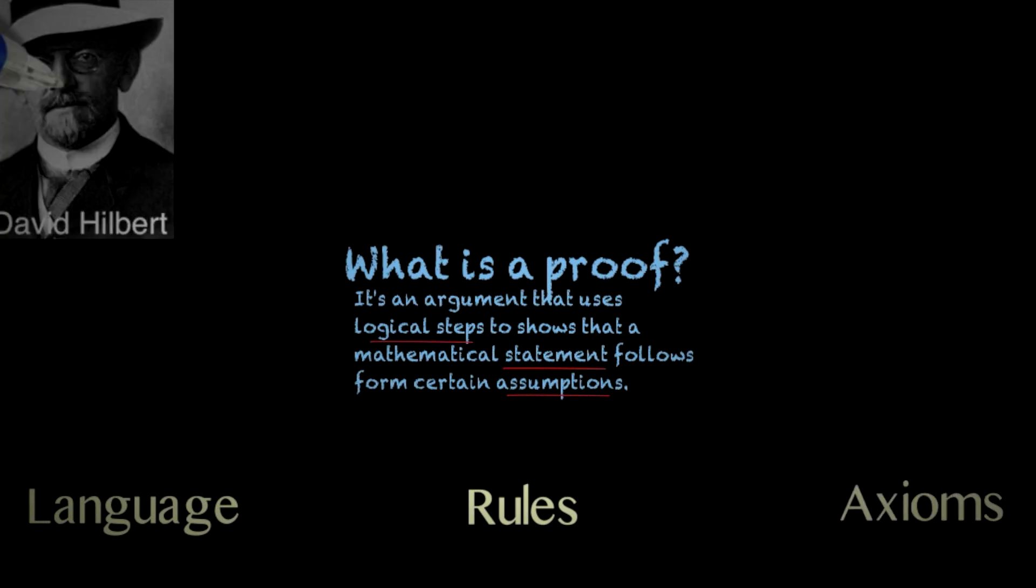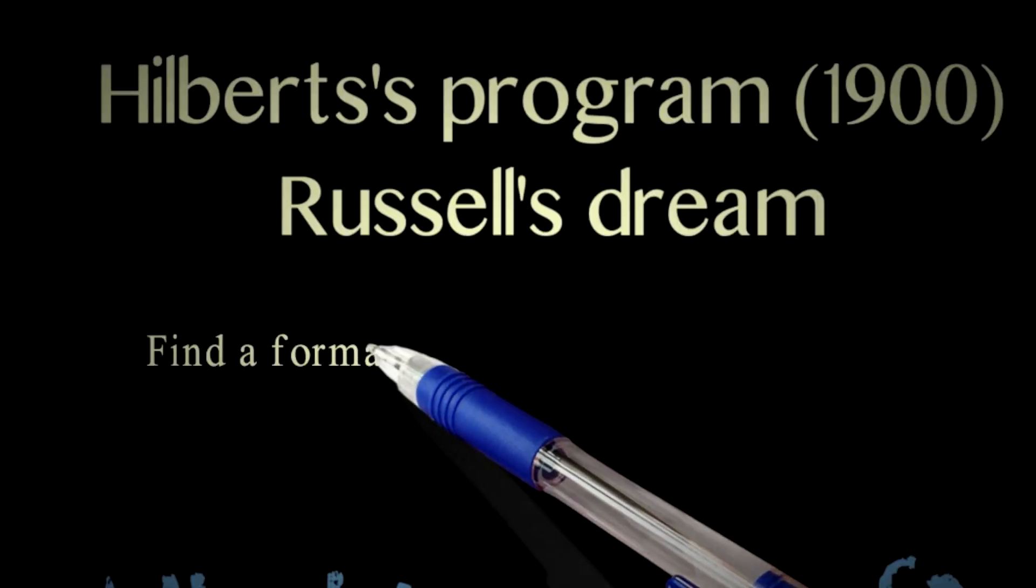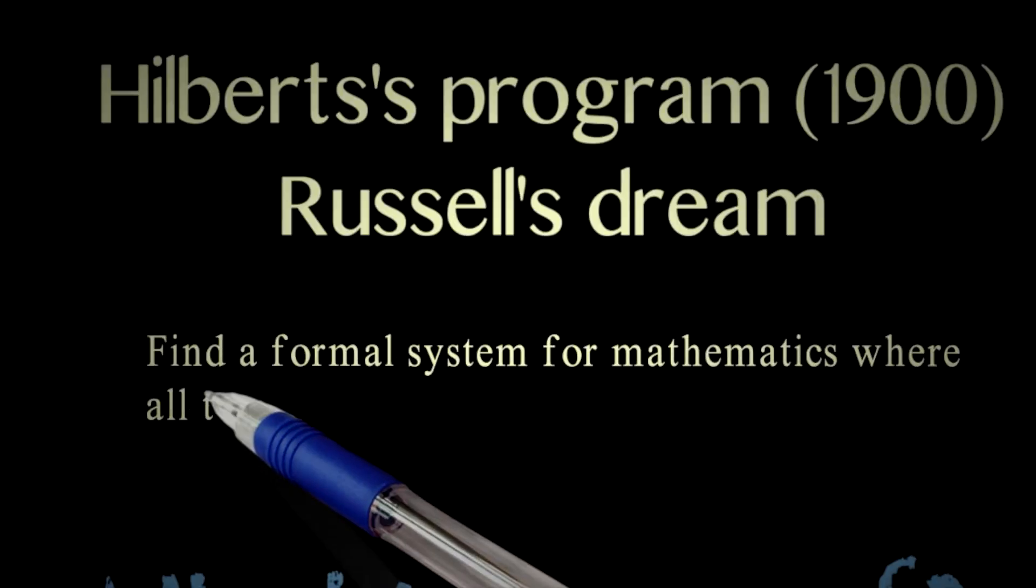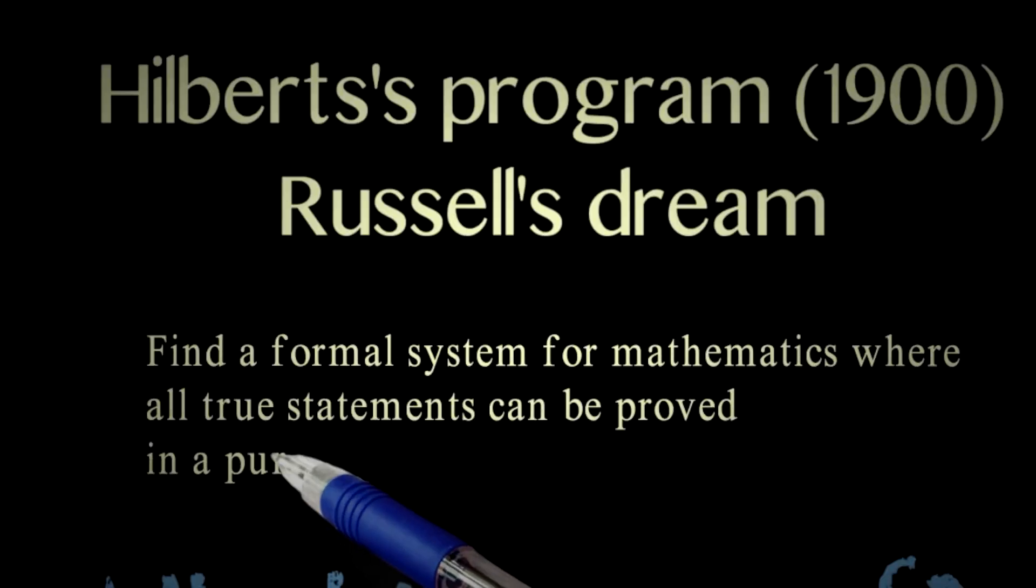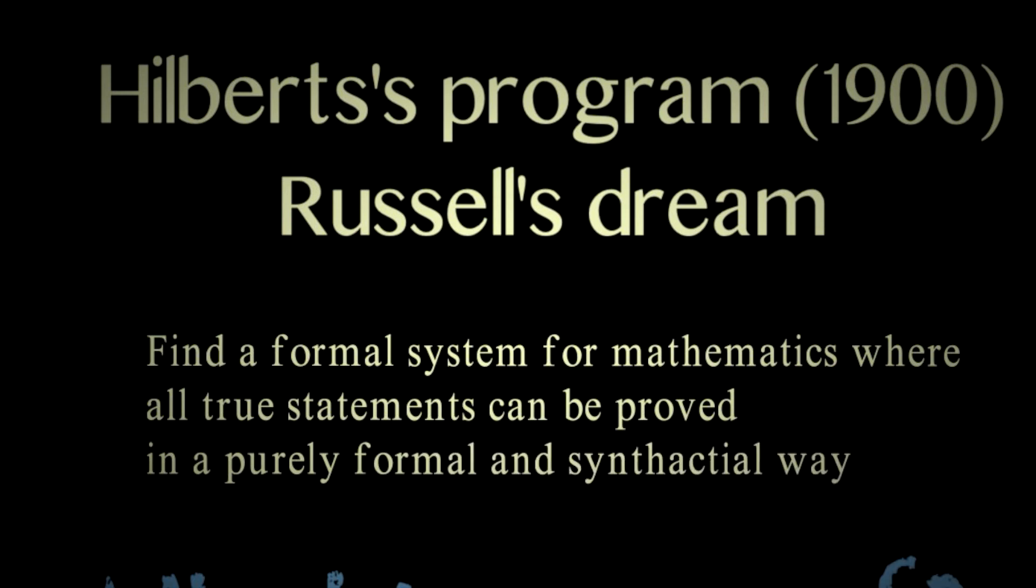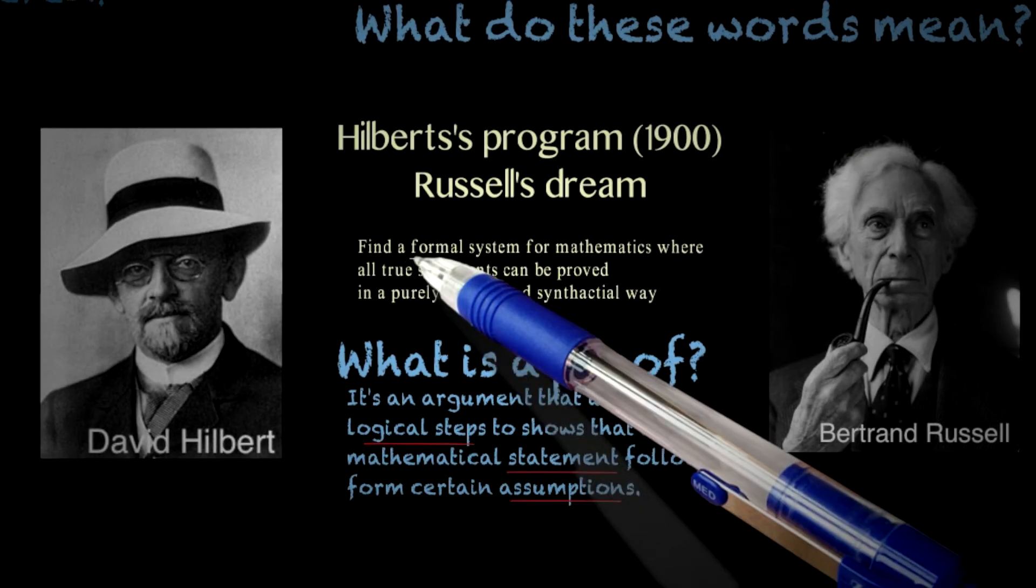More than 100 years ago, this man wanted to build a formal system for all of mathematics where all statements could be proved in a purely formal and syntactical way. By that I mean in a way that only involves manipulating symbols following certain rules in a purely mechanical way without having to even know what the symbols mean. This way, you could be sure about something being true or not in a purely mechanical way that nobody could argue with. Let's see how that worked out at the end.